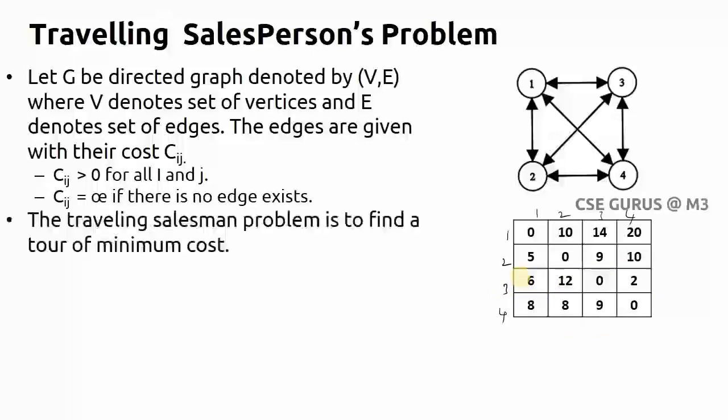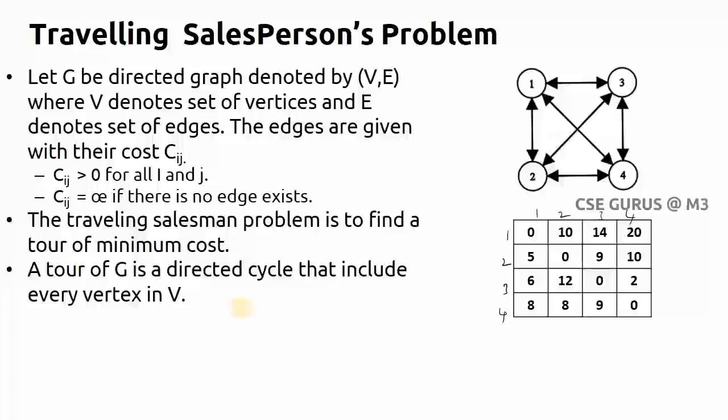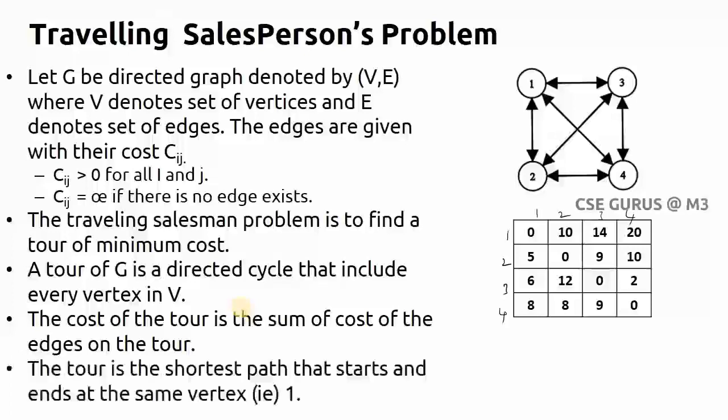The traveling salesperson's problem is to find a minimum cost tour. It is a directed cycle that includes every vertex in V. The cost is the sum of all costs of edges on the tour. We need to find the shortest path that starts and ends at the same vertex.